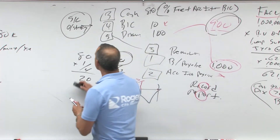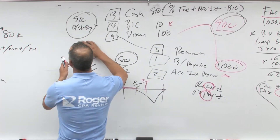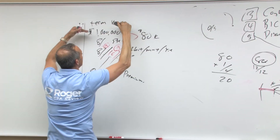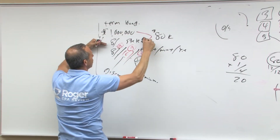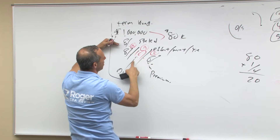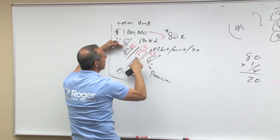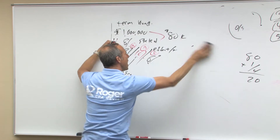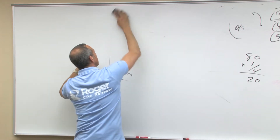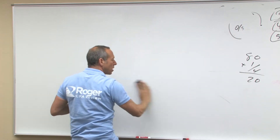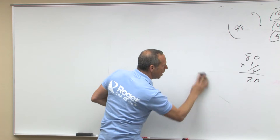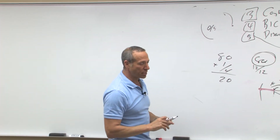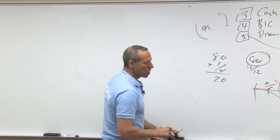Let's go through the example we did earlier, which is a five-year term bond, million dollars, and we'll do both discounted and premium: 8% stated issued at 10, and 8% stated issued at 6. Then we'll go through and do the effective interest table. My numbers aren't going to be exact because I want to make it a little easier to get through the calculations, but you'll see how it works.